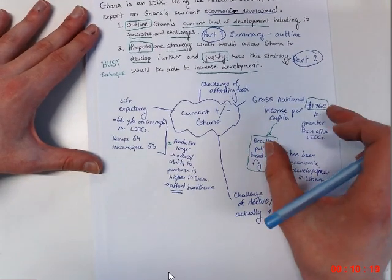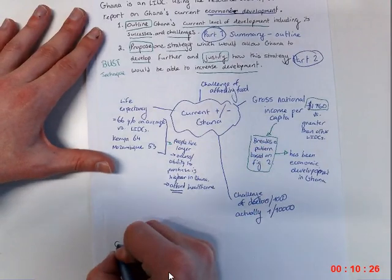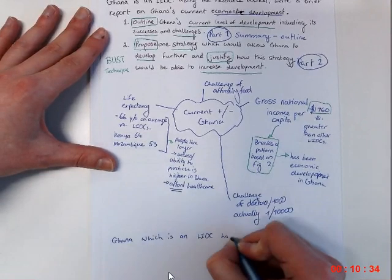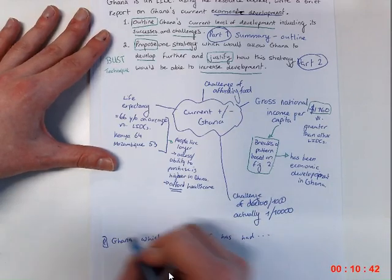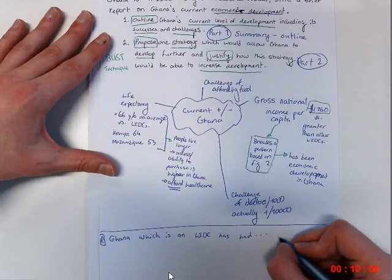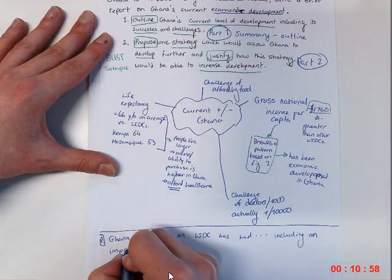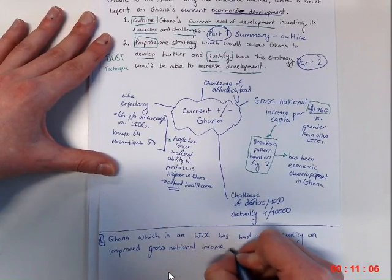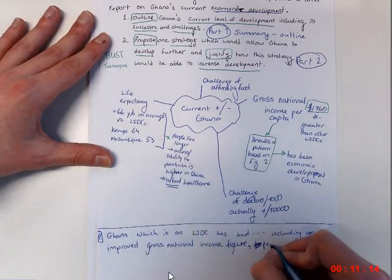Now when it comes to actually writing all of this, let's just take one of them and see how would we explore this. We want to make sure that we use the wording of the question. So Ghana, which is an LIDC, has had many successes and failures. And that's going to be our point here. So Ghana has had many successes and failures, including, and we're just going to pick one to start off with, and we'll pick gross national income, including an improved gross national income figure per capita, per person.